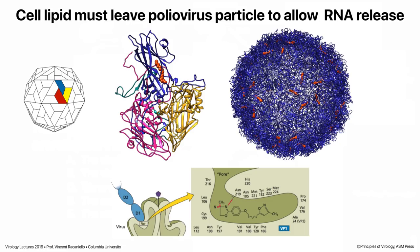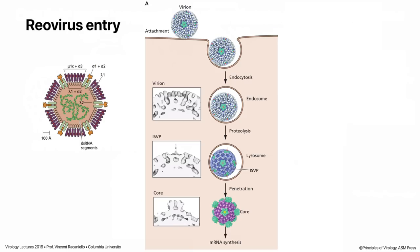The last virus I want to talk about is reovirus, where we understand a little bit why it has two icosahedral shells. Last time I told you it's unusual because it's made up of not one but a second shell — an inner shell and an outer shell. These viruses have a double-stranded RNA genome in segments.